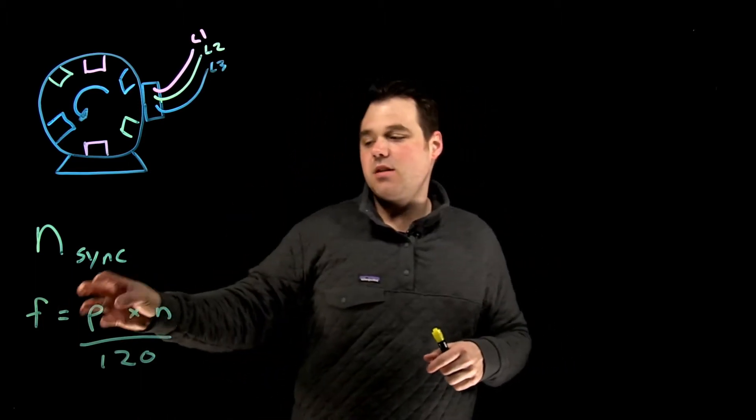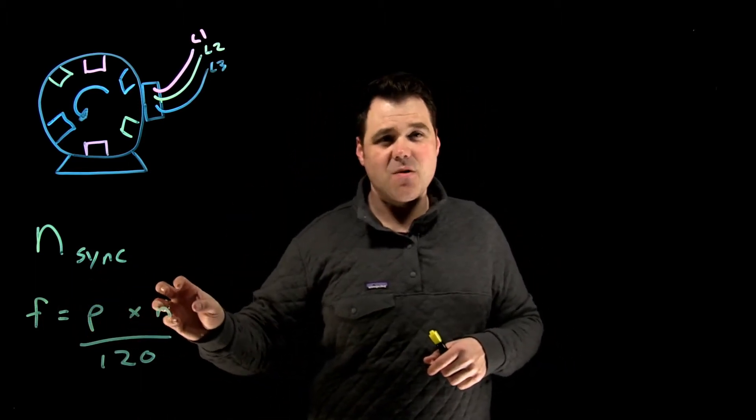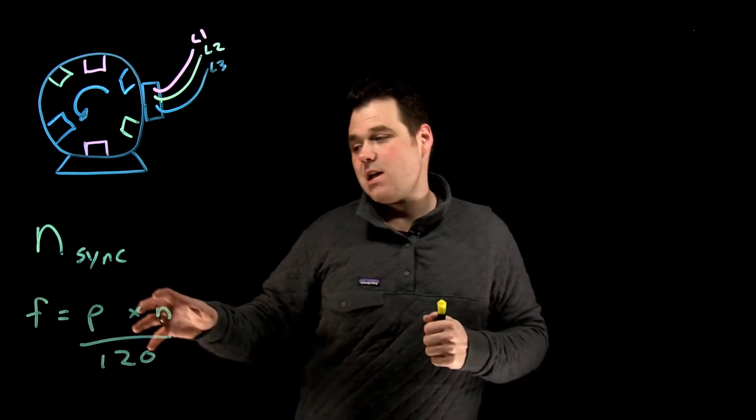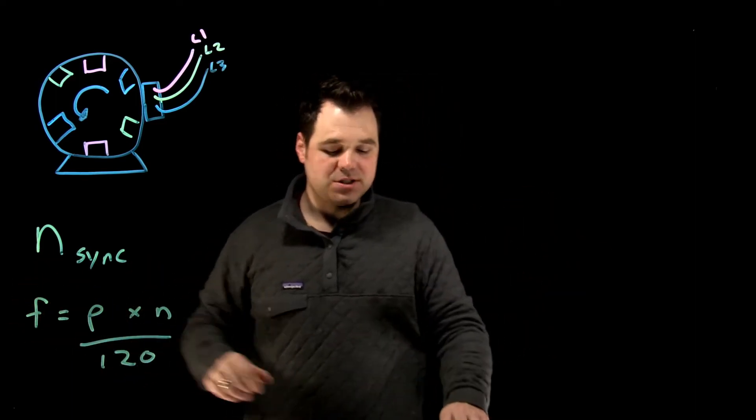...when I'm generating, the number of poles in my generator, the speed I rotate it divided by 120, which is a constant, gives me the actual frequency of the source.